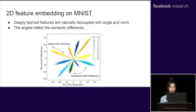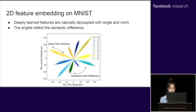Previous work by our collaborator visualizes features on MNIST by setting the output feature embedding dimension as 2. The visualization shows that deep-learned feature embeddings are naturally decoupled into angle and norm, where the angle represents semantic difference while higher norm stands for higher confidence. Although this previous work touched on the implicit correlation between human visual hardness and CNN characteristics, it did not quantitatively measure the correlation.